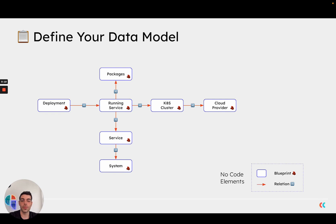The first element that we give you is a blueprint. A blueprint is a flexible object that can be used to describe every asset in your infrastructure or environment. Everything can be represented using a blueprint.